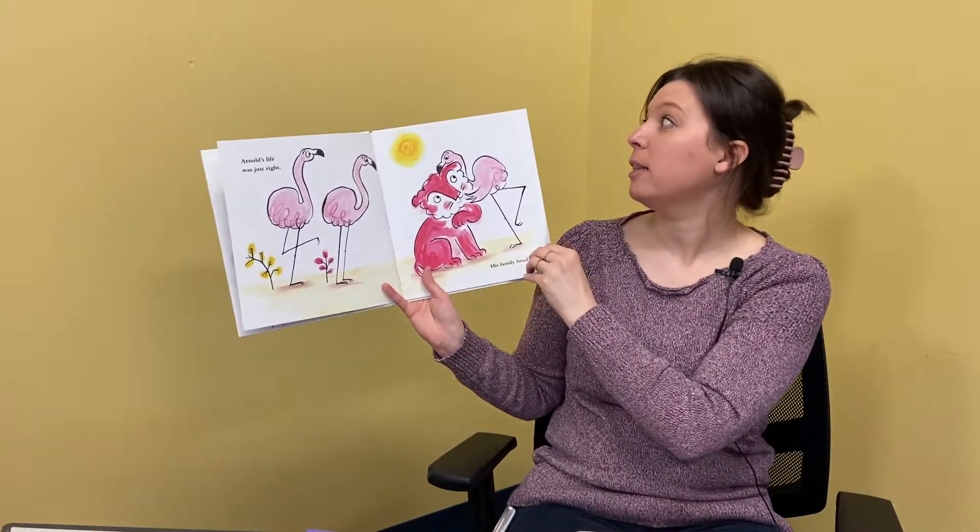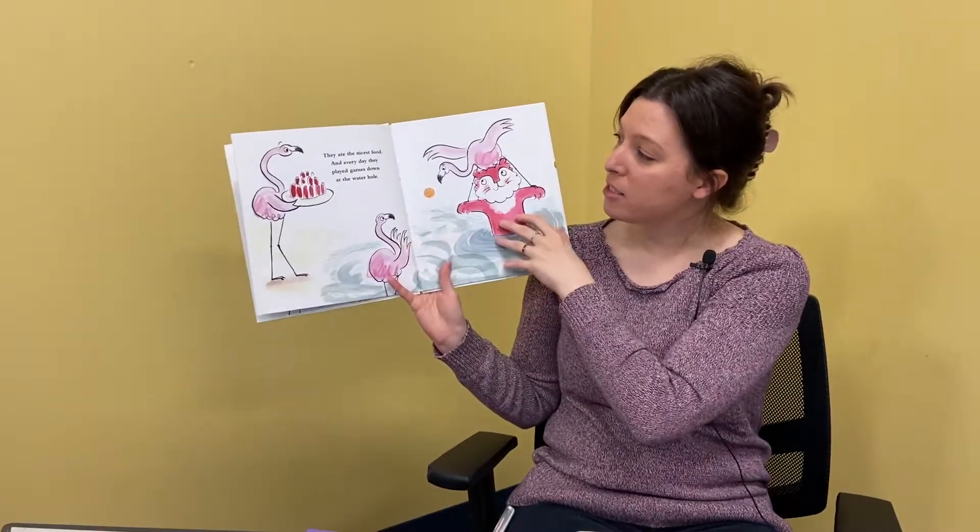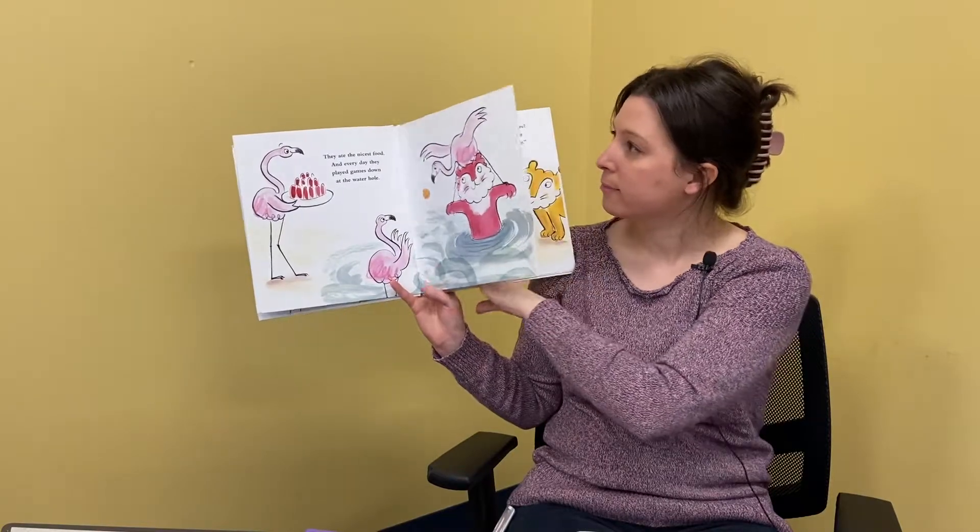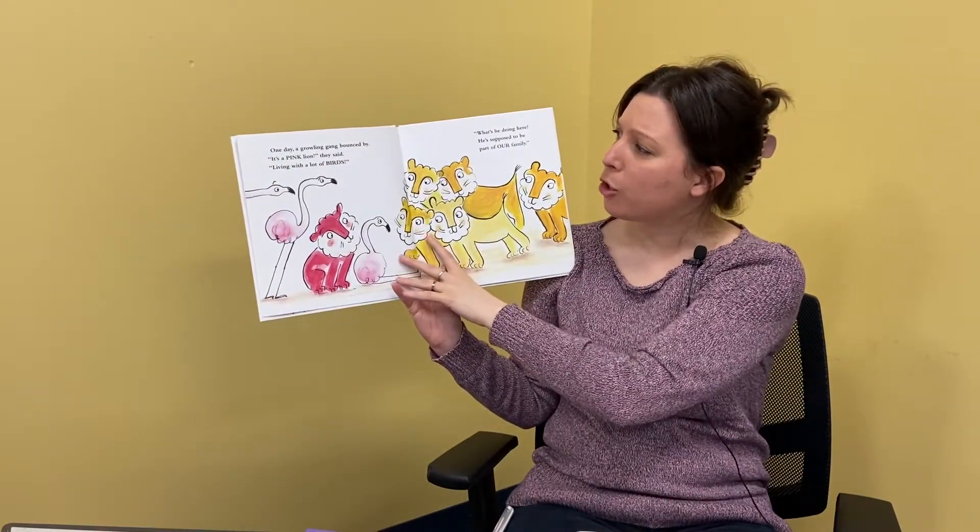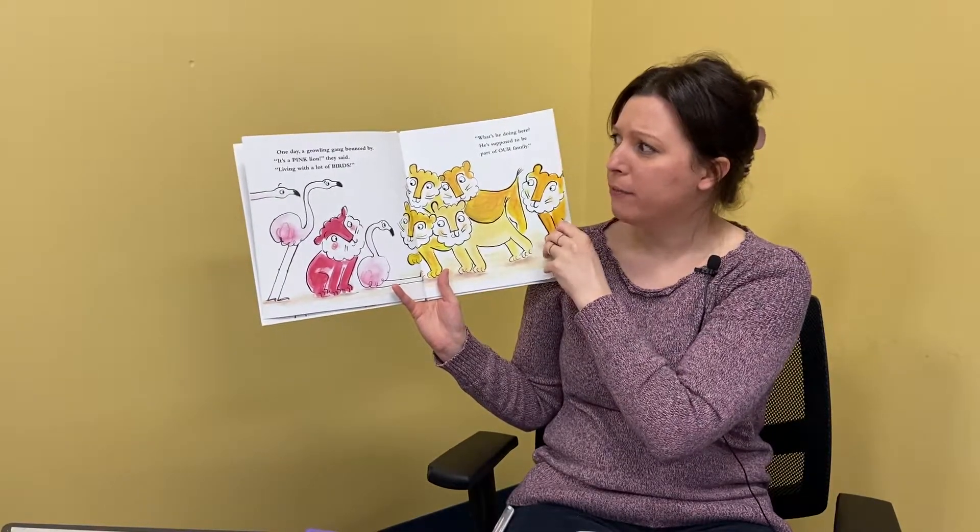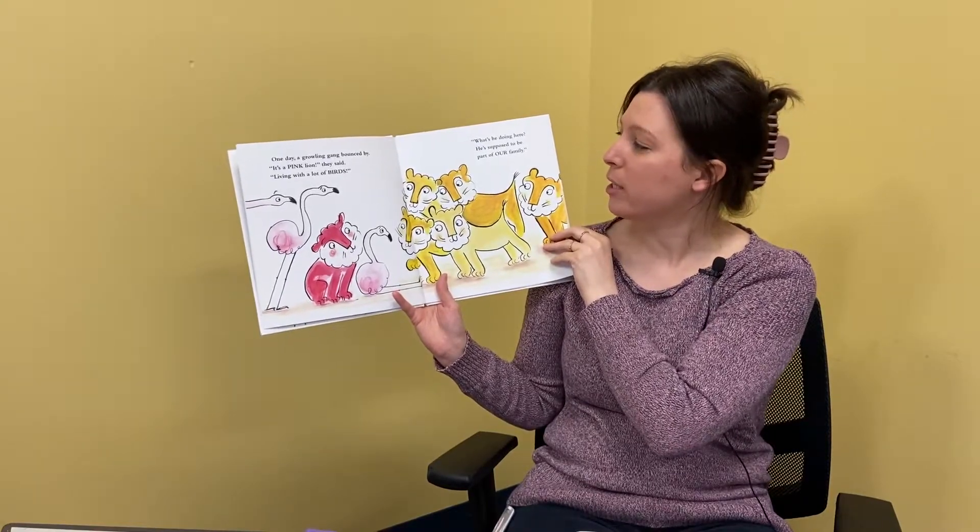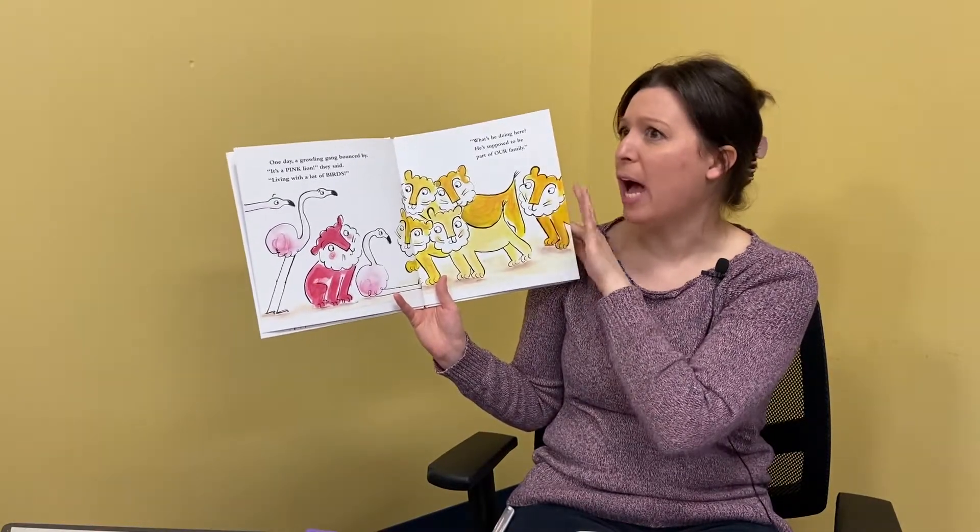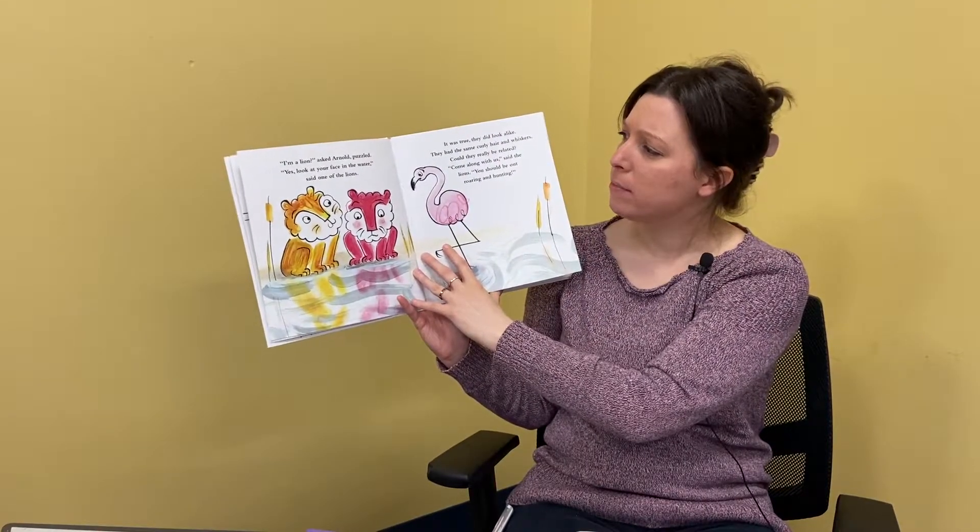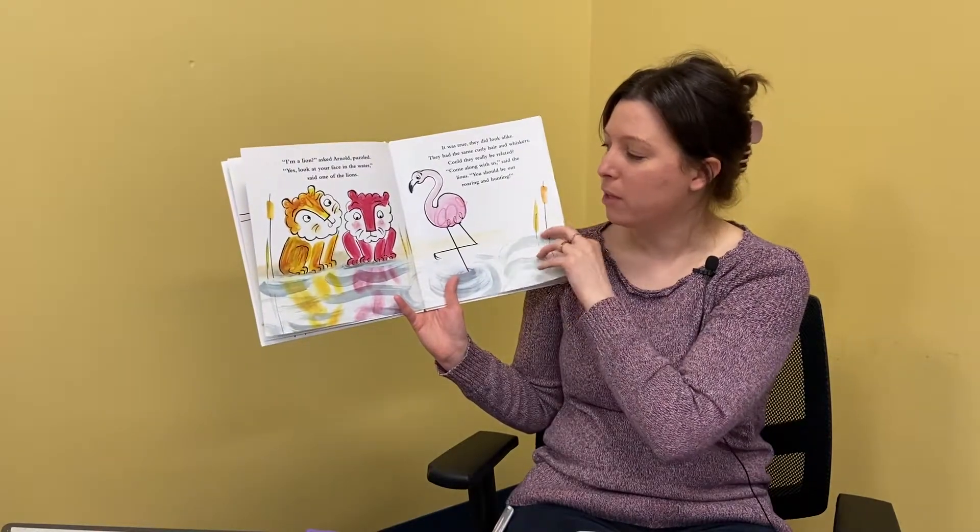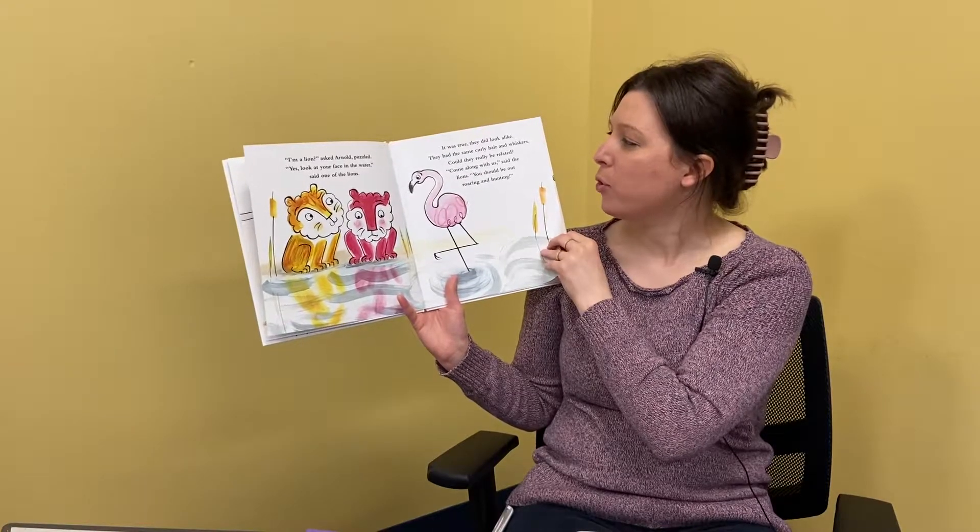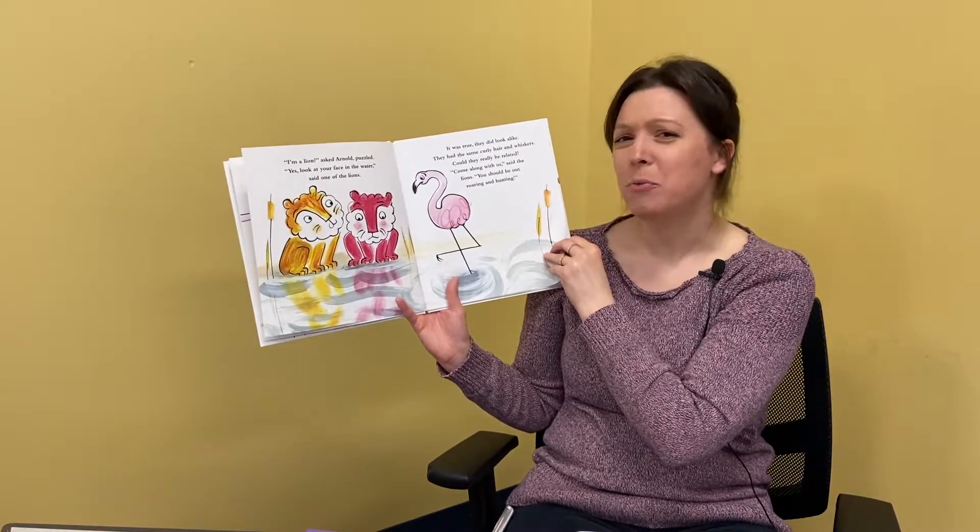Arnold's life was just right. His family loved him. They ate the nicest food and every day they played games down at the waterhole. One day a growling gang bounced by. It's a pink lion, they said, living with a lot of birds. What's he doing here? He's supposed to be a part of our family. I'm a lion, asked Arnold, puzzled. Yes, look at your face in the water, said one of the lions. It was true, they did look a lot alike. They had the same curly hair and whiskers. Could they really be related?